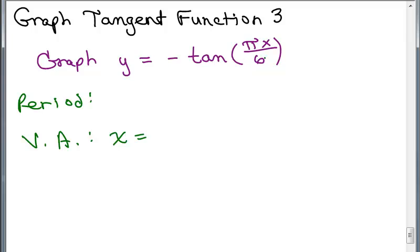Well, the coefficient of x is pi over 6, and remember that for the tangent function, we've got pi for the period, so you have to divide by b. In this case, b is pi over 6. So that would give us pi times 6 over pi. The pi's will cancel or divide out. We have a period of 6.